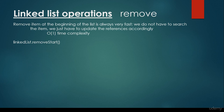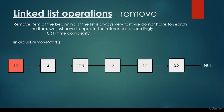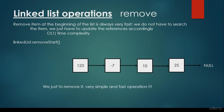Removing an item at the beginning of the LinkedList is always very fast. We don't have to search for the item, we just have to update the references accordingly in O(1) constant time complexity. We have the LinkedList with items 12, 4, 123, minus 7, 10, and 25, and we would like to remove the first item — basically the root of the LinkedList. We just have to remove it, and in Java for example, we just have to set it to null. What about removing the next item? The root node becomes 4, and we just get rid of it. Quite a simple and fast operation.